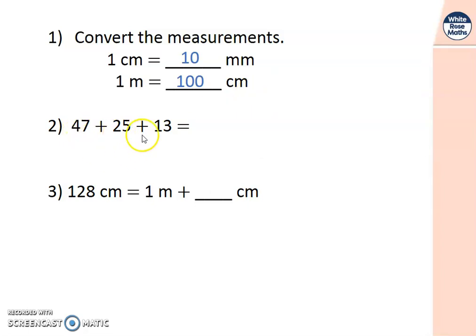Number two, 47 add 25, add 13. How will you work this one out? I looked at it because 7 and 3 make a 10. So if I take this 3 and add it onto there, this makes it up to the next 10, which is 50. Then if I add this 10, that makes 60. Then if I add 20, 60 add 20 is 80. And five more is 85. Well done if you found that.